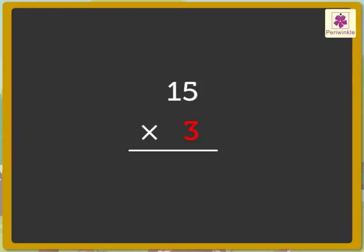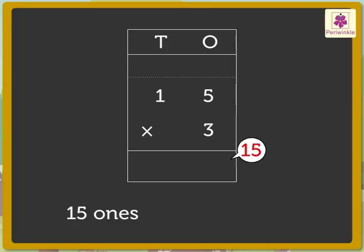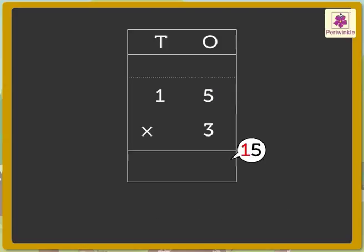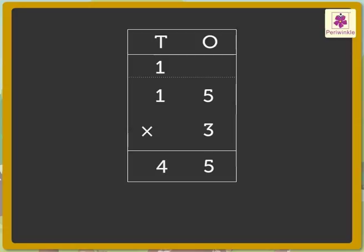We have to multiply 3 and 15 to find the total number of bananas. First, multiply the digit in the ones place. That is, 5 into 3 is equal to 15. Now, regroup 15 ones as 1 ten plus 5 ones. Carry 1 ten to the tens column and write 5 in the ones column. Multiply the tens. That is, 1 into 3 is equal to 3 tens. Add 1 ten to 3 tens, which is equal to 4 tens. Write 4 in the tens.